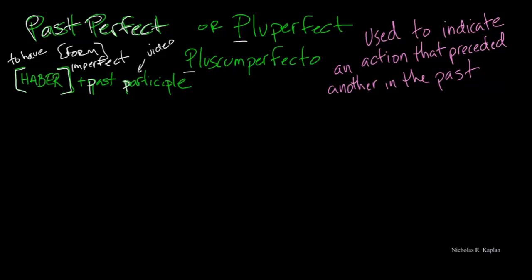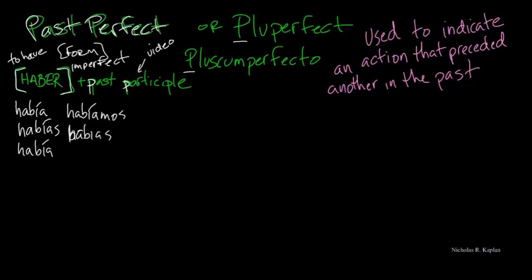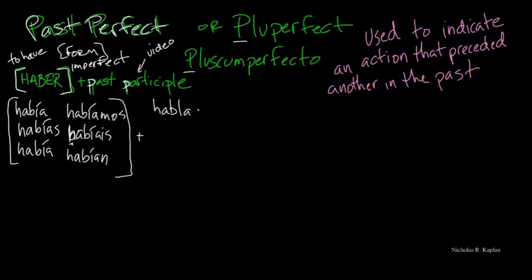So to form this, first let's take our haber. We have haber, and then we'll have some participles. If we have an AR verb like hablar, we would take off our AR and add ADO. For an ER or IR verb, we take off the ending and add IDO. And then we also have some irregular participles.